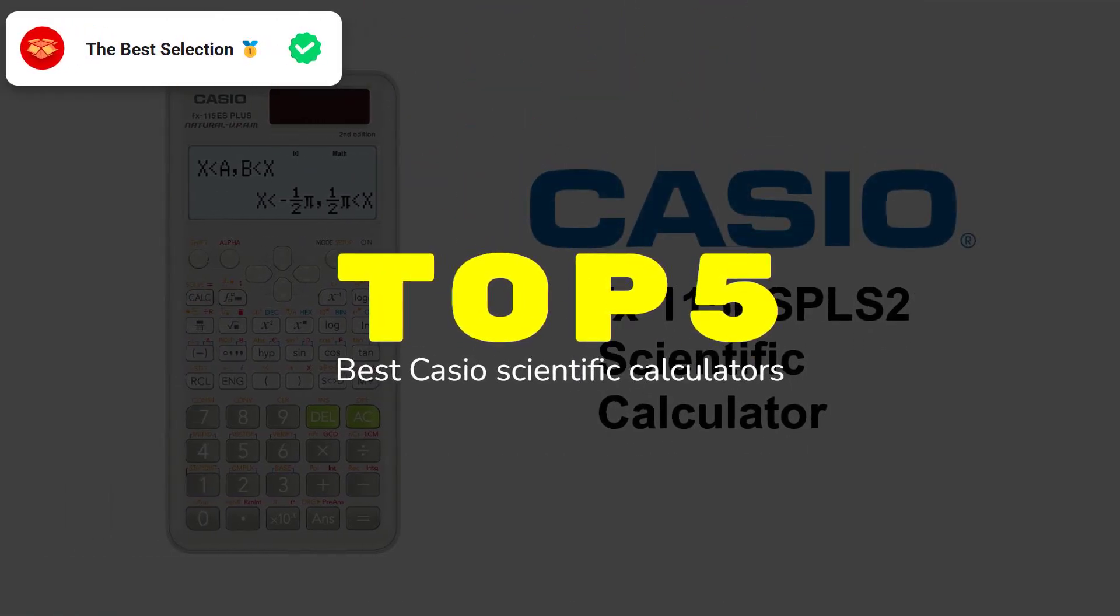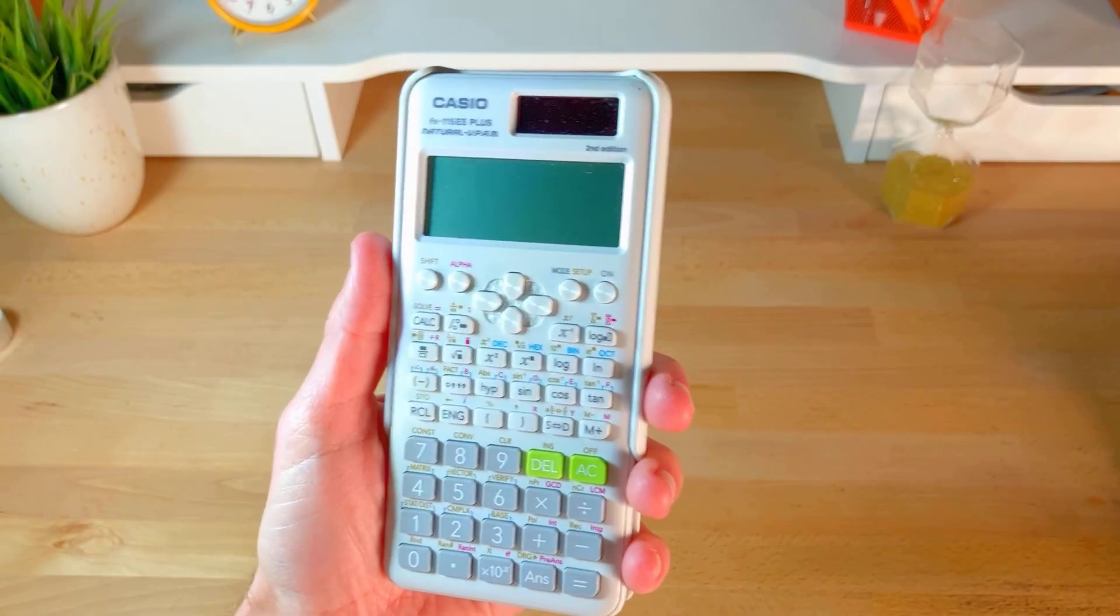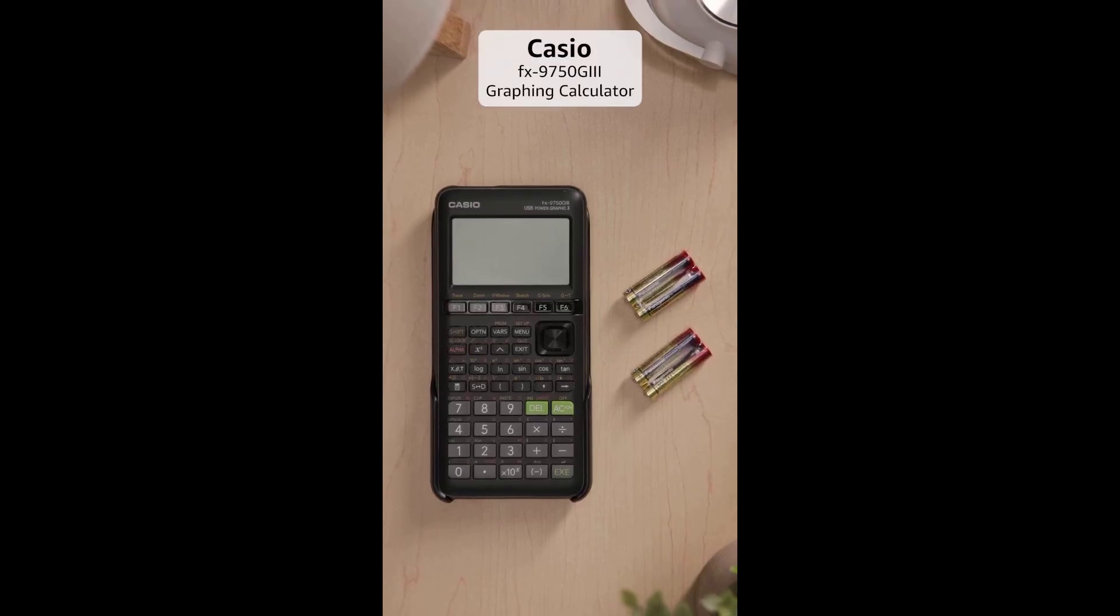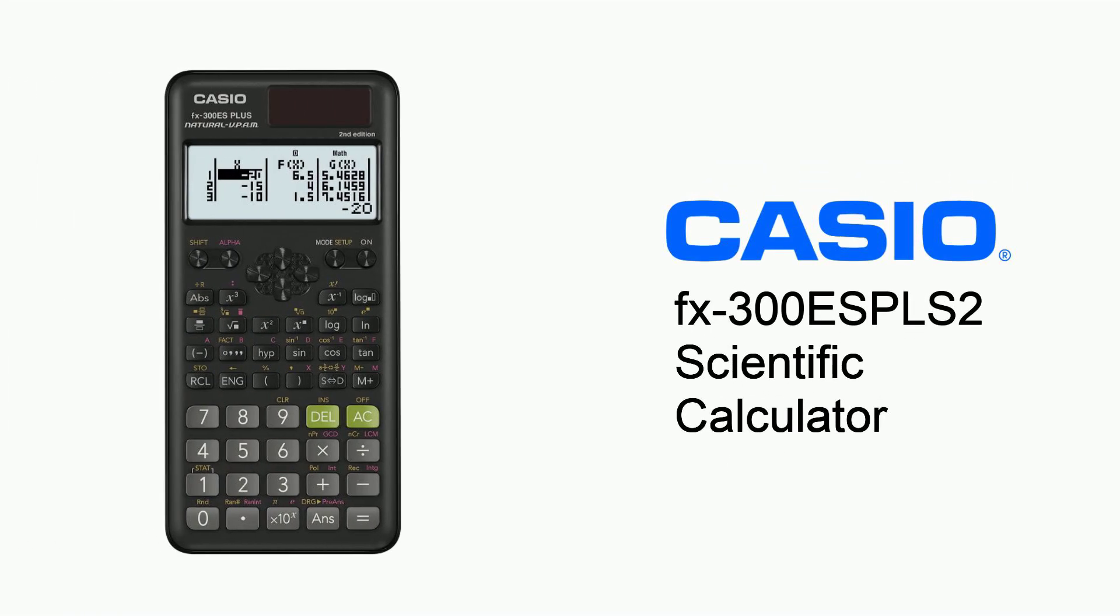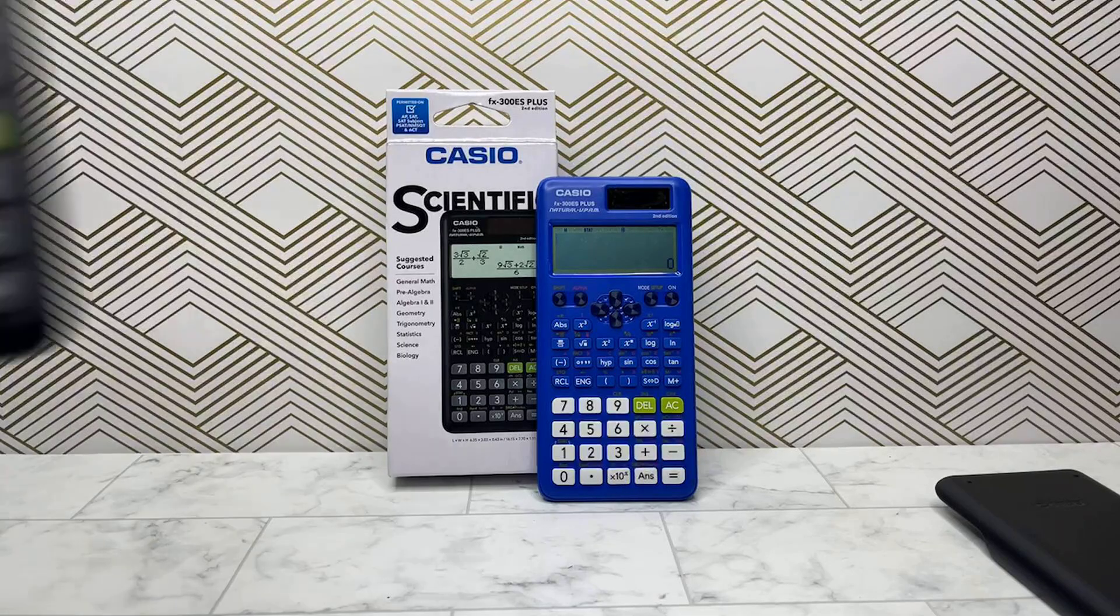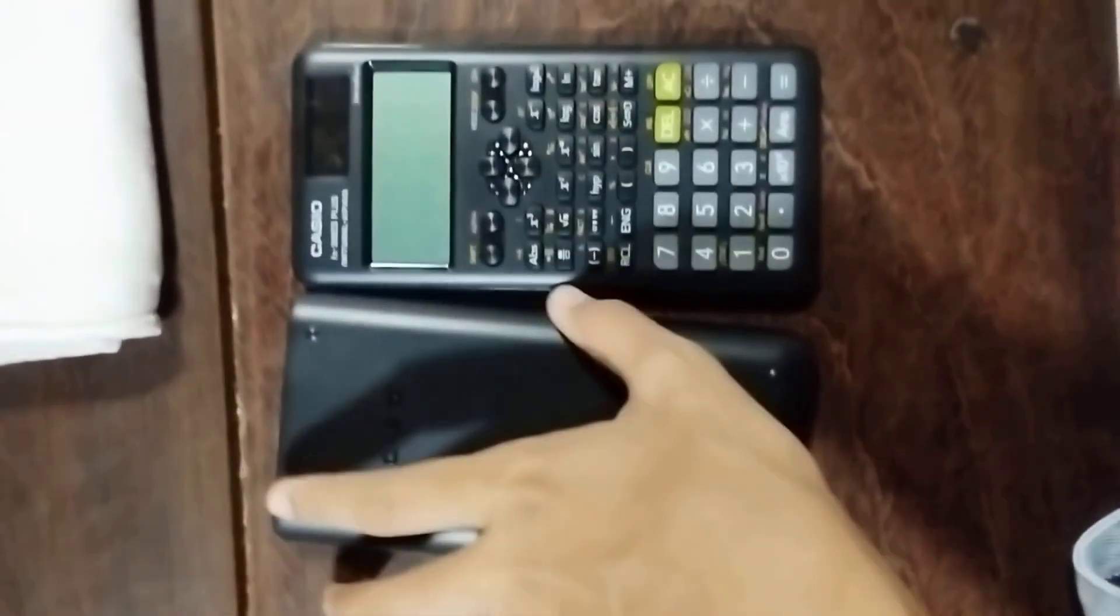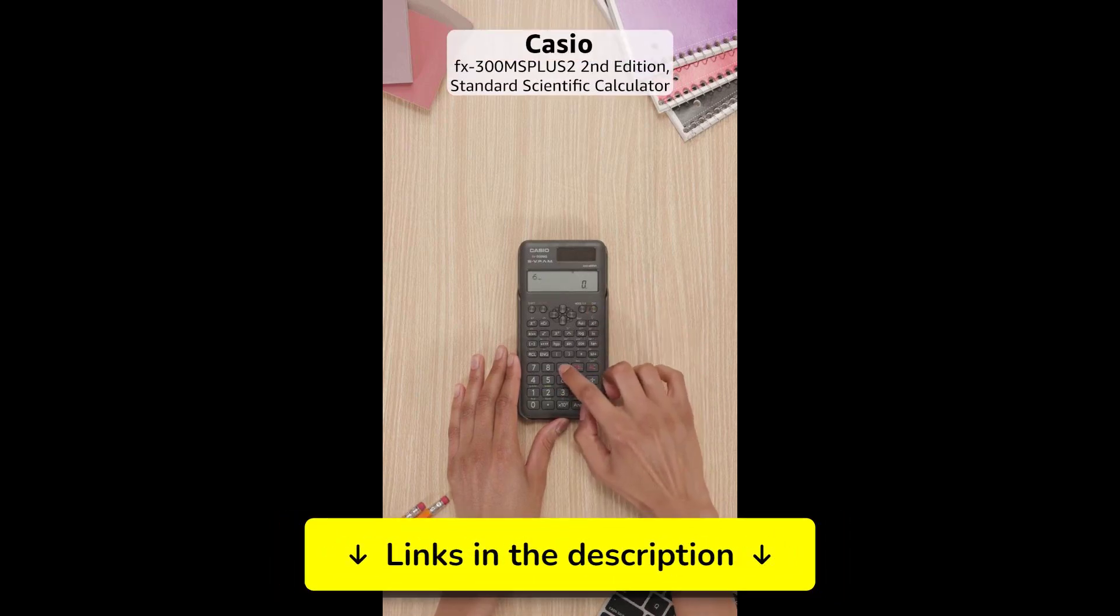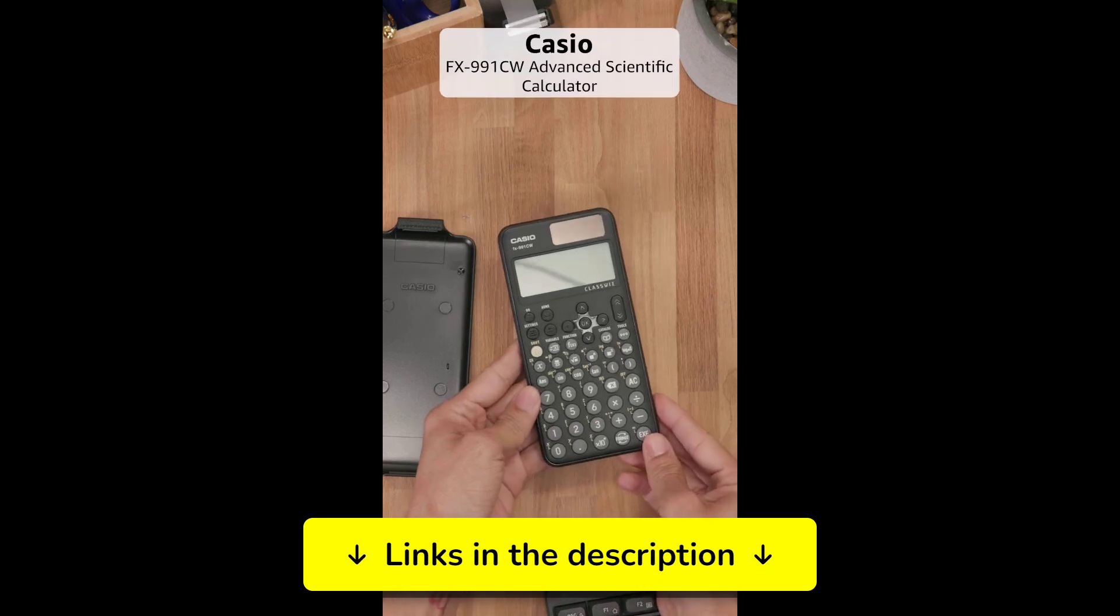After rigorously testing 25 scientific calculators over the past semester, I've identified the five Casio models that truly excel in academic and professional settings. Our comprehensive testing process, which includes advanced mathematical computations, engineering calculations, and statistical analysis, has revealed which calculators deliver the best performance and reliability. Each calculator has specific features that might be perfect for your field of study or work, so make sure to watch the complete list. You'll find all the links with the best updated prices in the description.